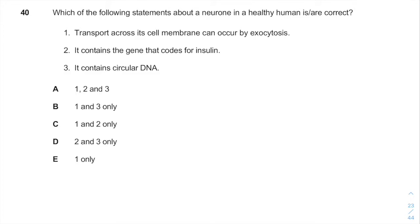And this is a great example of a trick Cambridge loves to make and to repeat itself. You will see in a second. So, which of the following statements about a neuron in a healthy human is correct?